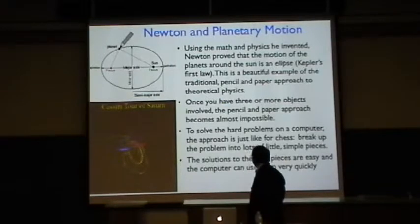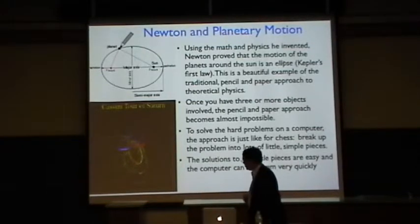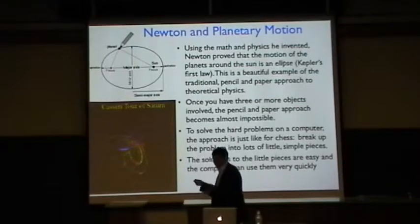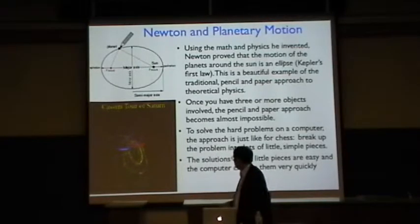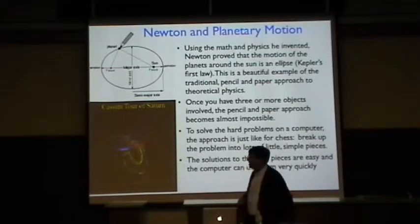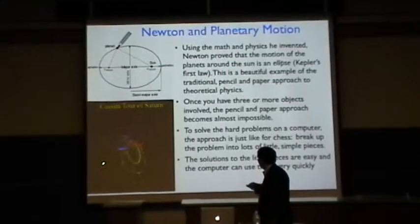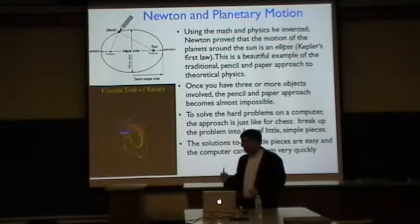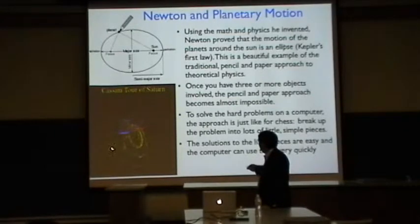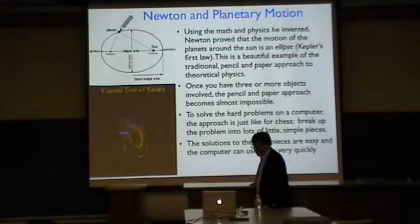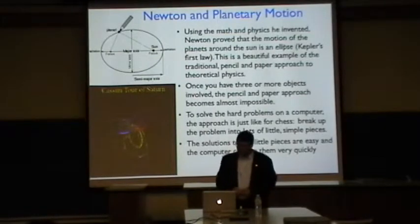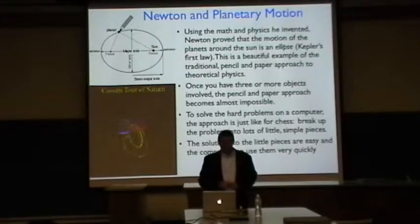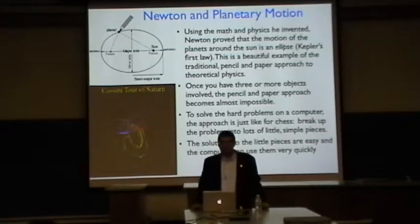Now the trouble is that once you have three or more objects involved, things get extremely complicated, and the pencil and paper approach becomes almost impossible. It's a little bit hard to see, but there's one of our spacecrafts called Cassini that is currently touring Saturn now. Saturn has a big moon in Titan, and this is a plot of some of its orbits. It's a craft that has its own rocket, so it adjusts its orbit occasionally, but mostly it's just following and coasting under Newton's laws. You can see how complicated this is, how much harder it would be on pencil and paper to solve this compared to the simple ellipse orbits.